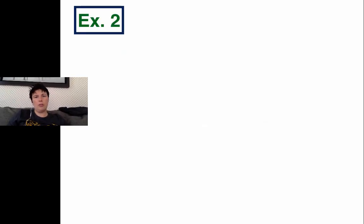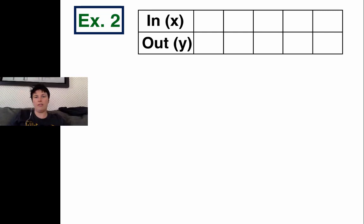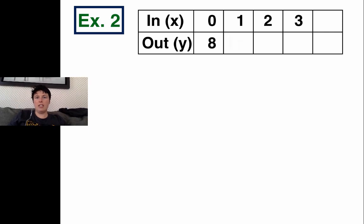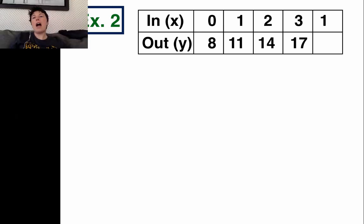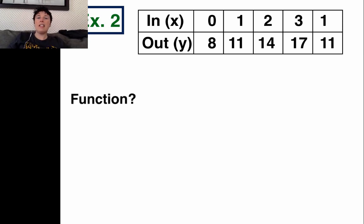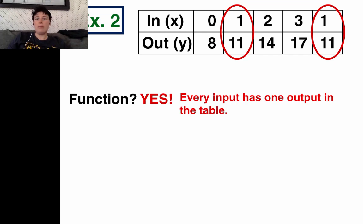Let's do example two — a table. In this table I have an input and output, which we call x and y. I'll fill it with: x values 0, 1, 2, 3 and y values 8, 11, 14, 17. I also left a blank spot — if I accidentally repeated x=1, I'd still expect the output to be 11. Is this table a function? We don't use the vertical line test since it's not a graph, but when x equals 1, the output is 11 both times. Every input has one output, so yes, this is a function.